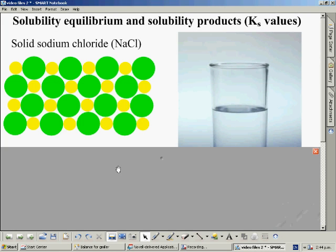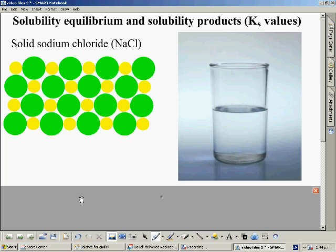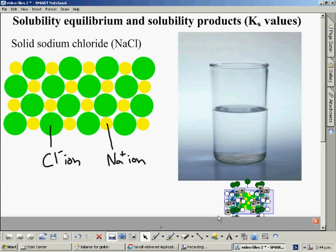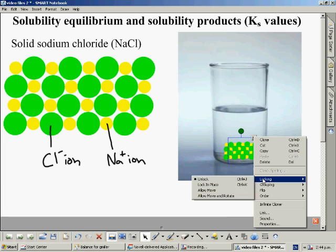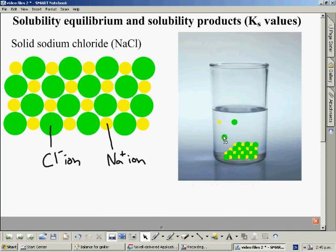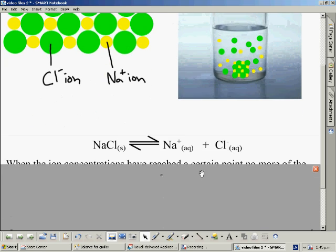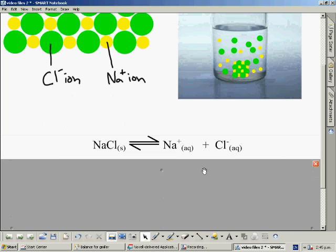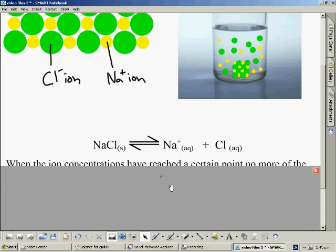This is how solubility equilibrium works. Say for example I have some solid sodium chloride. That is an ionic substance that will contain sodium ions and chloride ions. I take some of that solid and I put it inside a beaker of water. What will happen is the ions will begin to break free from their crystal structure and they are going to float into the solution. However there is a certain limit to how many ions can fit inside a given volume of solution. Once that limit has been reached then the solubility equilibrium has become established.